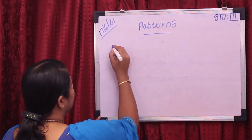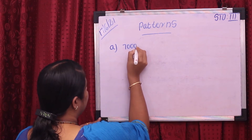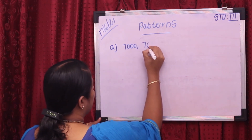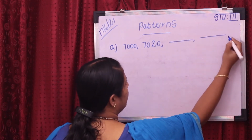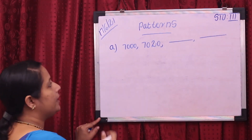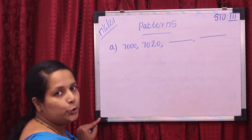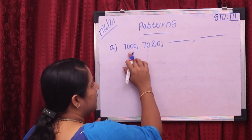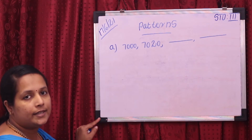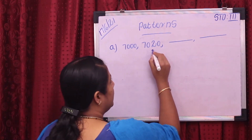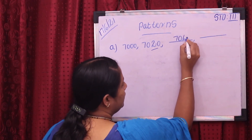Our first example: given the number 7,000, then next is 7,020. The difference is 7,000 plus 20 equals 7,020. So how many difference is there? 20 difference. So the next number with 20 difference is 7,040.